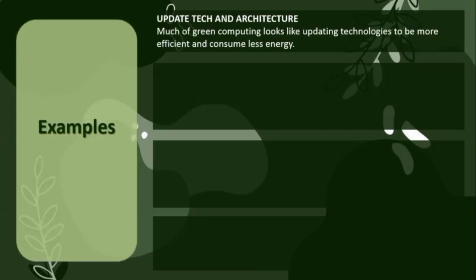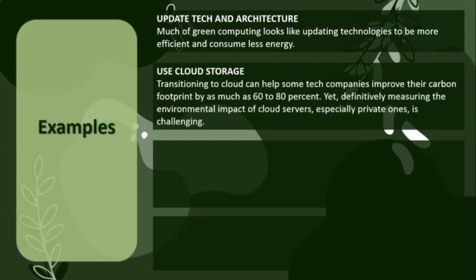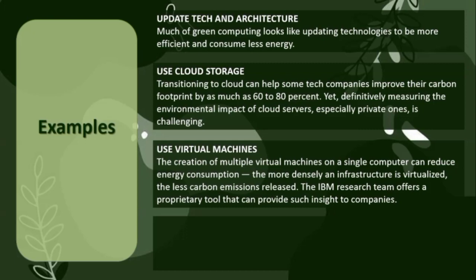Examples include: Updated IT architecture — after adopting Green Computing, systems become more efficient and reduce energy consumption. Use cloud storage — Green Computing adoption can reduce a company's carbon footprint by 60% to 80%, making environmental impact a significant challenge and opportunity for private companies. Use virtual machines — having more than one virtual machine on a single computer reduces energy consumption, and increasing virtual infrastructure density helps reduce carbon emissions. IBM's research team provides special tools to implement these practices in organizations.